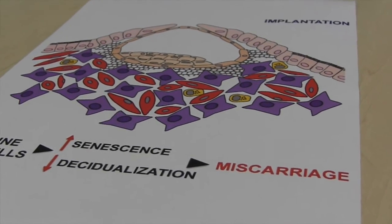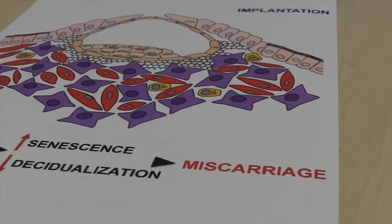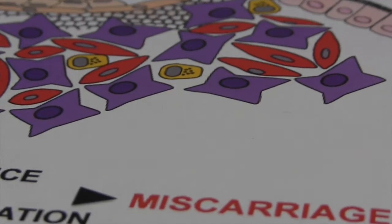In addition, we also found evidence that stem cell deficiency in the endometrium is associated with heightened senescence — accelerated aging of these cells. And that explained the primary defects in patients suffering from recurrent miscarriages.